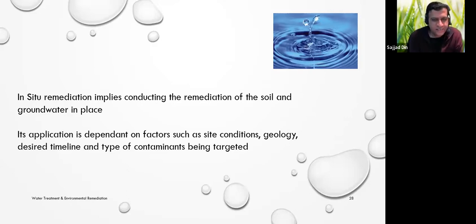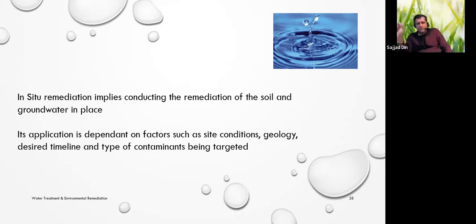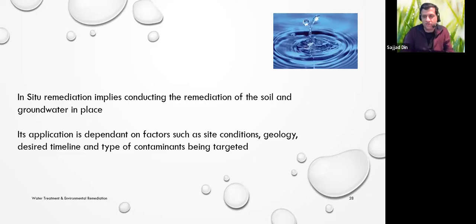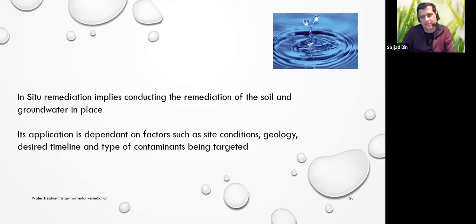In-situ remediation involves soil and groundwater treatment in place. Its application depends on different factors — geology, water table, and timelines. You can't simply go to a site and assume it will work every time. For example, if you have the money and want to develop a site within two months, it's better to dig it all up, spray chemicals, backfill, and you're done. But sometimes that's not possible because there's infrastructure or a building in place and they don't want to spend half a million dollars. In-situ chemical oxidation takes longer, but in many cases it can get the job done.